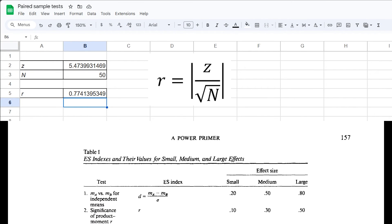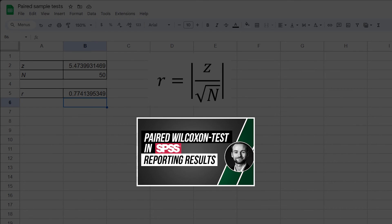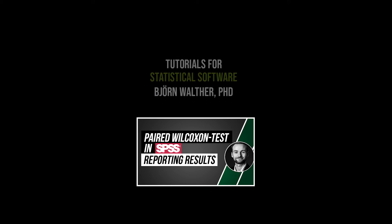In my example, 0.774 is well above the threshold for a large effect if I use Cohen's thresholds. When you're done, you have to write up the results. The video that appears now will show you how.